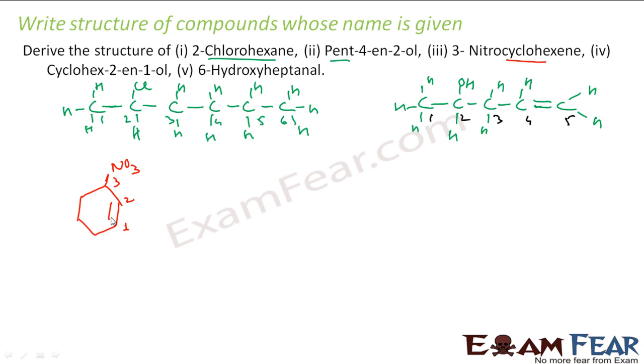We know that double bond is given more importance. Because here if you see, the suffix is hexene. That is, the double bond is more important here. In this case, the primary functional group is -ol group.